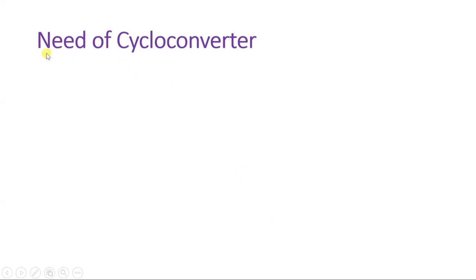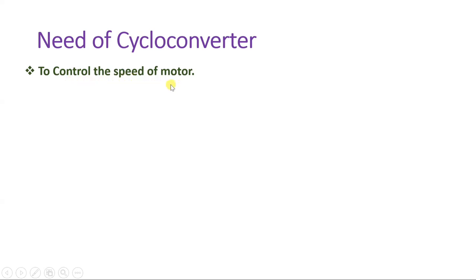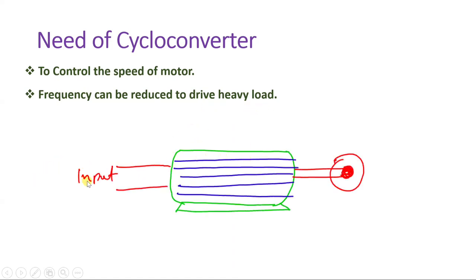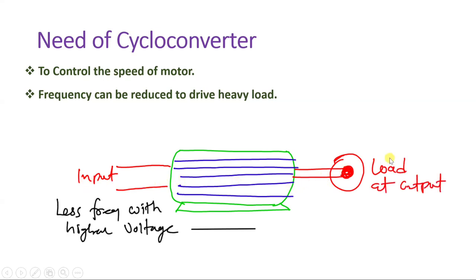A cycloconverter can be used to control the speed of a motor. Different motors have different load handling capacities. By changing frequency, we can control motor speed. If a motor is functioning with a higher load, one way to handle it is to reduce frequency — with less frequency and higher voltage, we can drive a heavy load, since heavy loads cannot be handled at higher frequency.